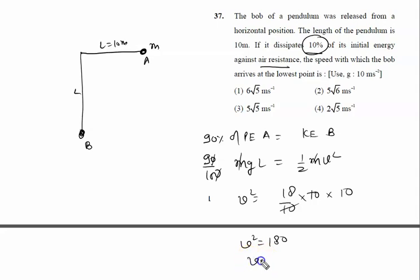We can write root 180 as 9 times 20, which is 9 times 5 times 4. Square root of 9 is 3, square root of 4 is 2, times root